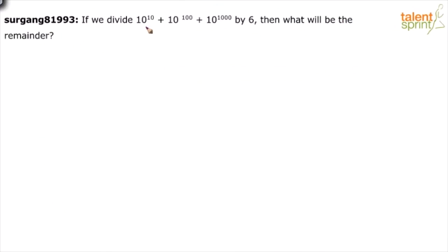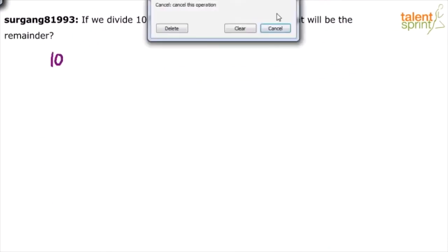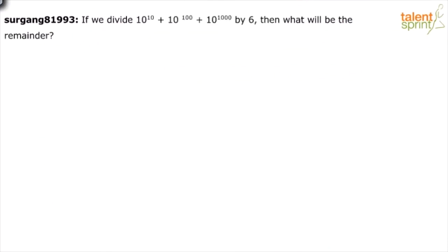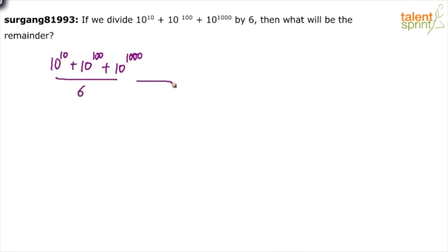If we divide 10 power 10 plus 10 power 100 plus 10 power 1000 by 6, then what will be the remainder? The number here is 10 power 10 plus 10 power 100 plus 10 power 1000 — a sum of three terms — and this has to be divided by 6. What is going to be the remainder?